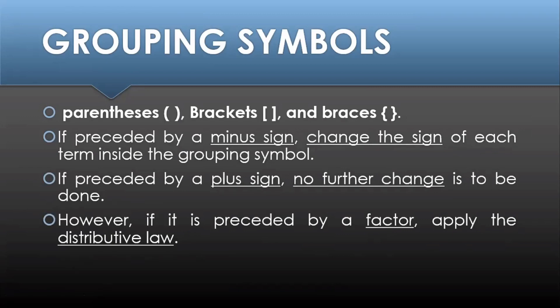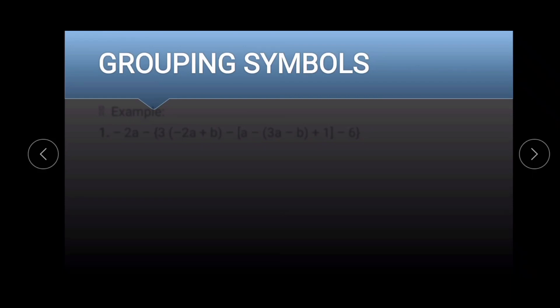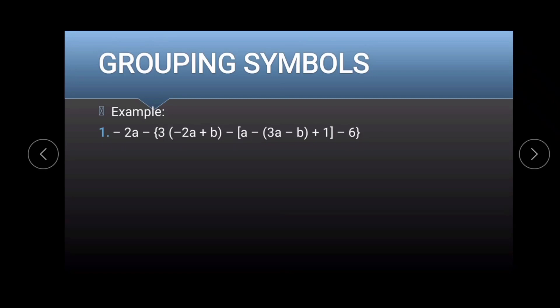Always remember that the goal is to eliminate the grouping symbols. For our first example, we have negative 2a minus 3 multiplied to negative 2a plus b, minus a minus 3a minus b plus 1 minus 6.